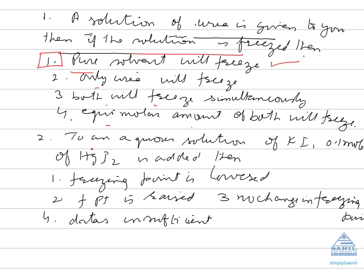Now second question: to an aqueous solution of KI, 0.1 mole of HgI2 has been added. What will happen to the freezing point? Now you very well know that KI reacts with HgI2 to form K2HgI4. So 4 species of KI, 2 of potassium and 2 of iodide, has given you 3 species.